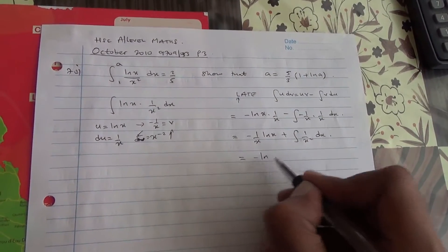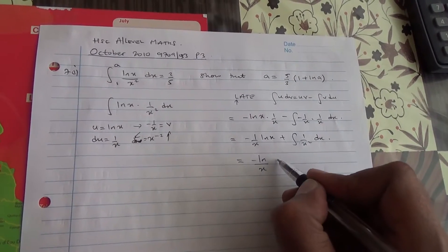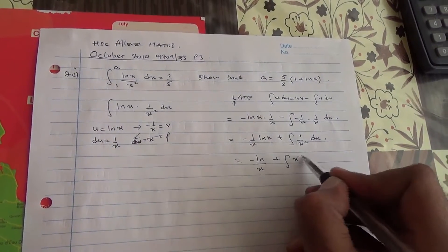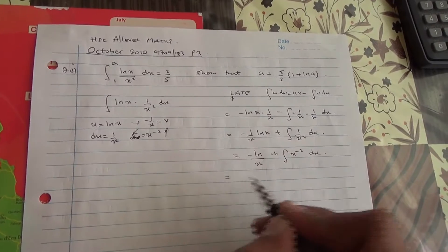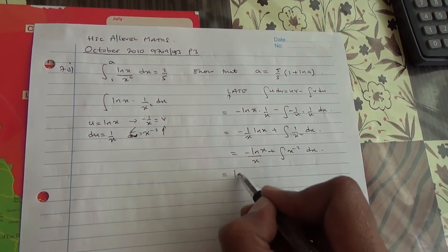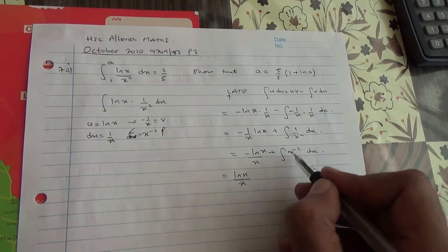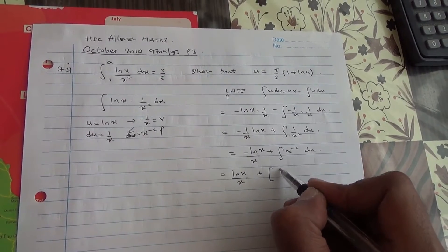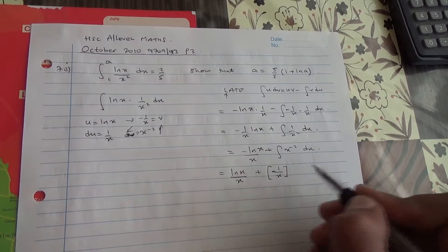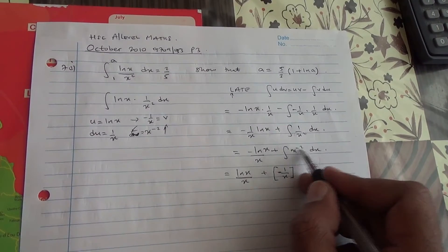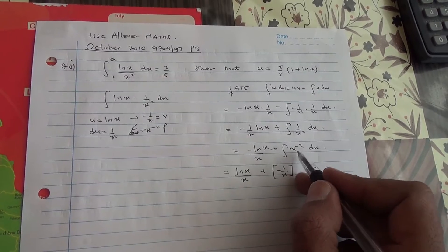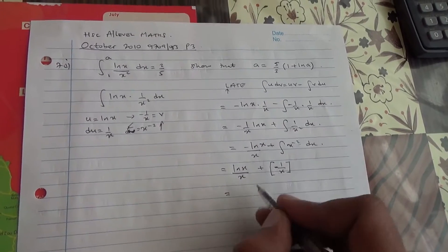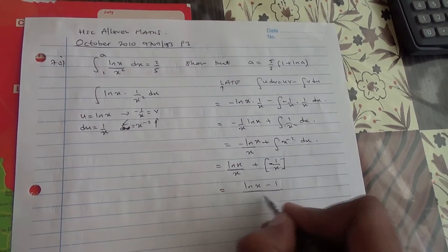So this is minus ln(x) over x, plus the integral of x to the power minus 2 dx. Integrating x to the minus 2: add 1 to the power, it becomes minus 1, and divide by the new power, giving minus 1 over x. The denominators are the same, therefore we have the combined result of minus ln(x) minus 1 all over x, or equivalently minus (ln(x) minus 1) over x.